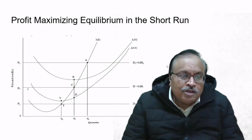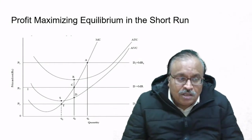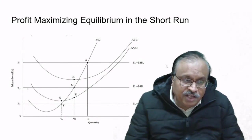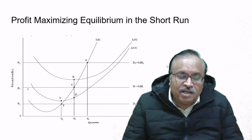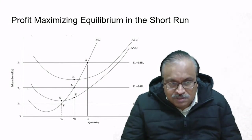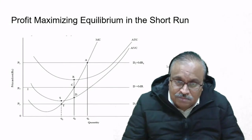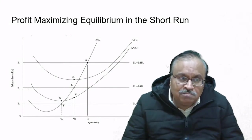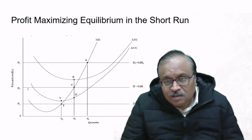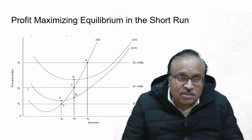This graph indicates that even the average variable cost is above the P3 level. Producing a good where the average variable cost exceeds price is not desirable at all, because it means we are earning losses on a variable cost basis. However, we can run the firm at P2 for a certain duration if we feel we can gradually raise the price. The moment AVC is greater than the price level, there is no point in pursuing production.